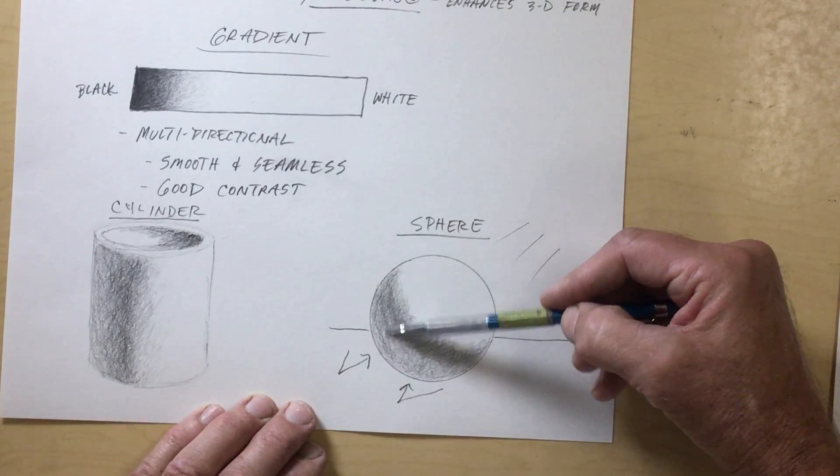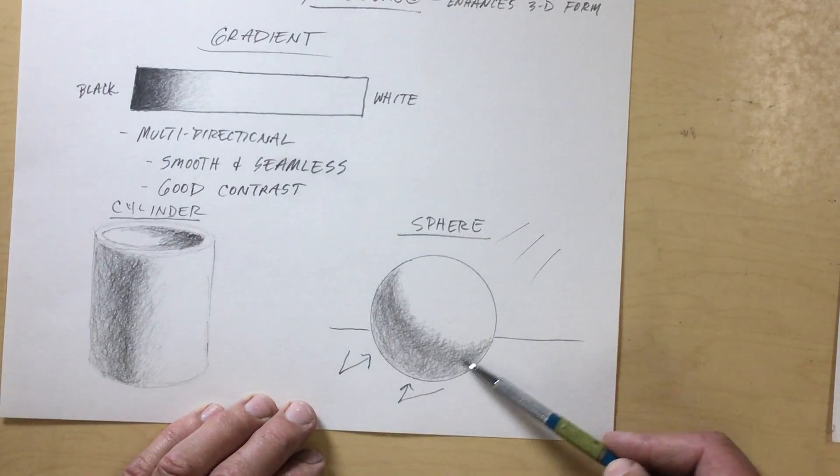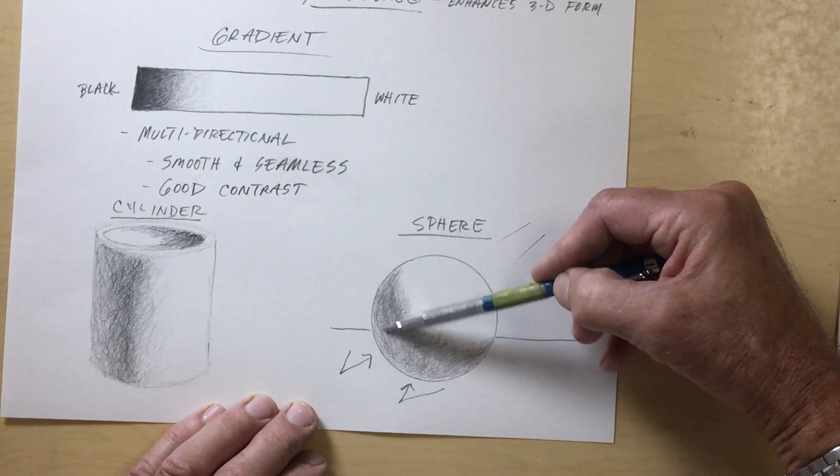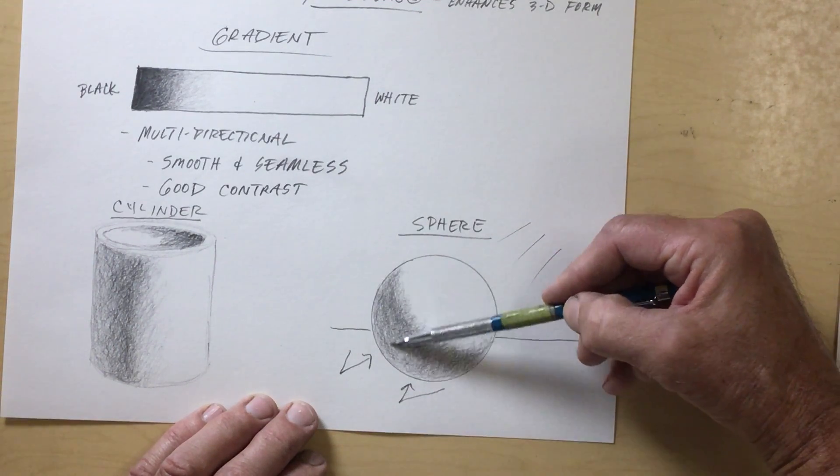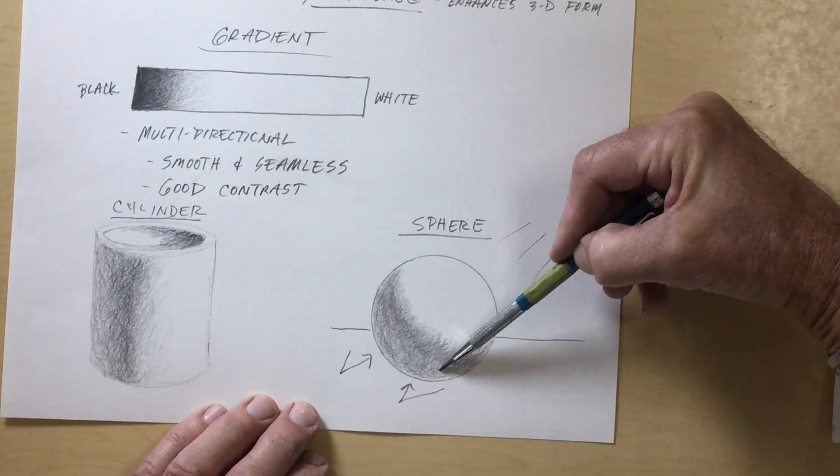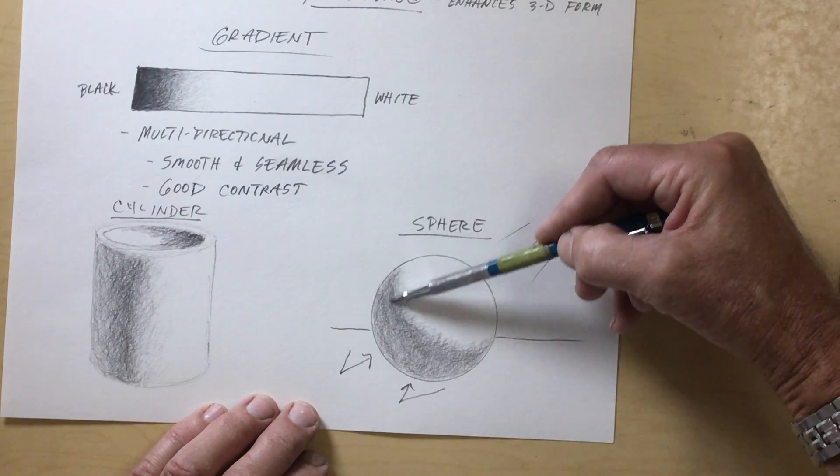And then we just keep working that like we did with our cylinder, adjusting it, adjusting our dark band.